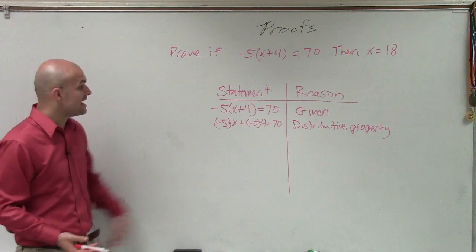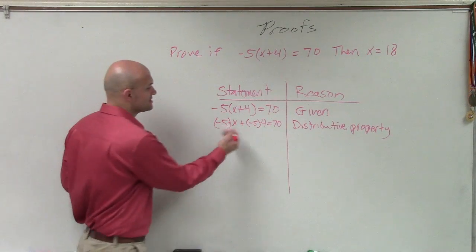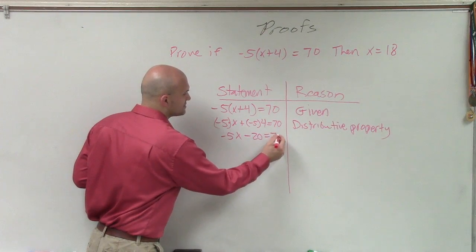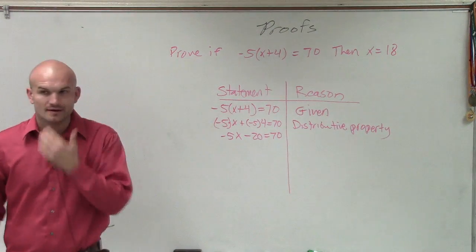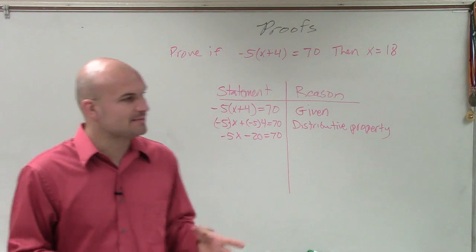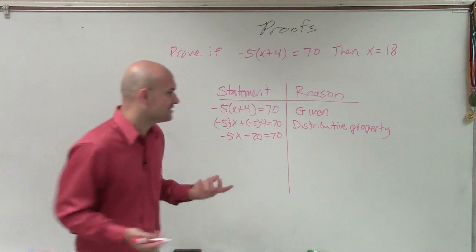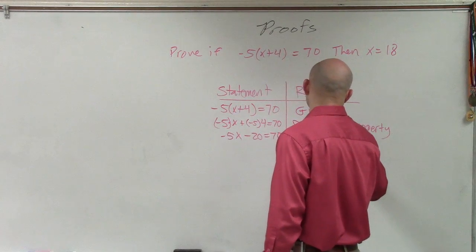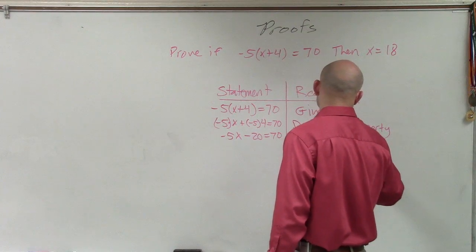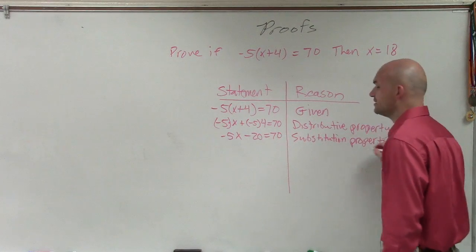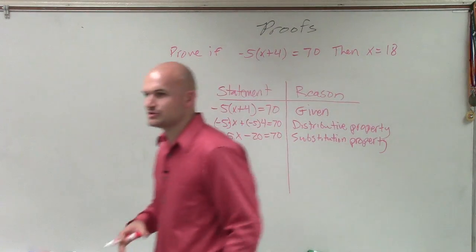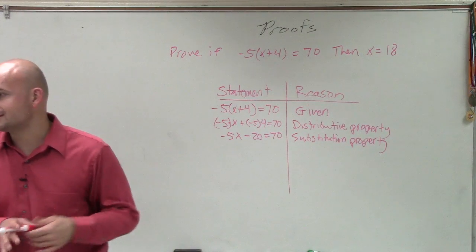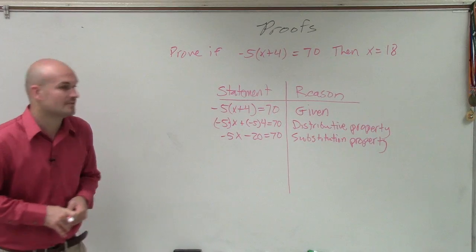All right, now, the next thing is now we can simplify this, right? So I can simplify this by saying negative 5x minus 20 equals 70. And a lot of times what we're doing is we're just simplifying that if one side is equal to the other, we can simplify this. So they just call this the substitution. But what I did is after I applied distributive property, I simplified that side.